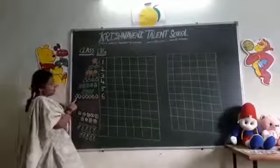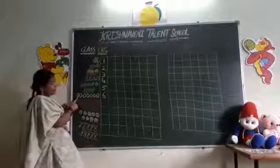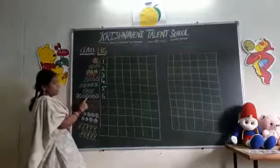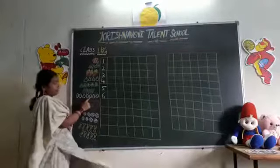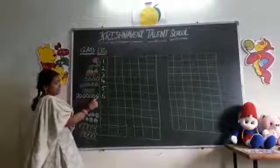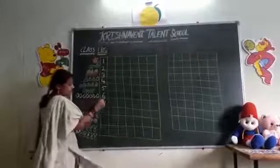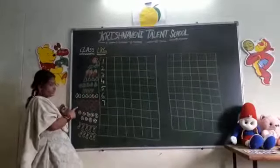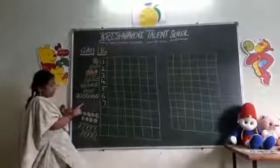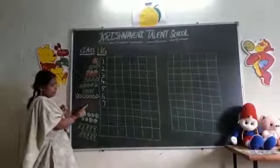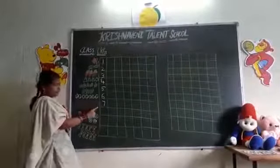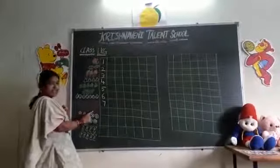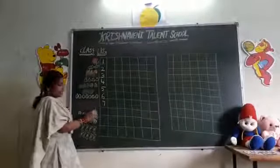Next. Here some smileys are there. How many? 1, 2, 3, 4, 5, 6, 7. Next number is 7. Next, what are these pictures? Trees. How many trees? 1, 2, 3, 4, 5, 6, 7, 8. How many trees are there? 8.